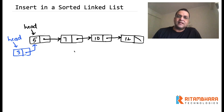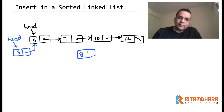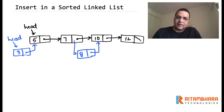Second is if we are inserting a node in between. So let's say if we are inserting a value 8 then 8 will come between 7 and 10. Which means that next of 8 will be 10 and next of 7 will be 8, and the previous link will be broken.